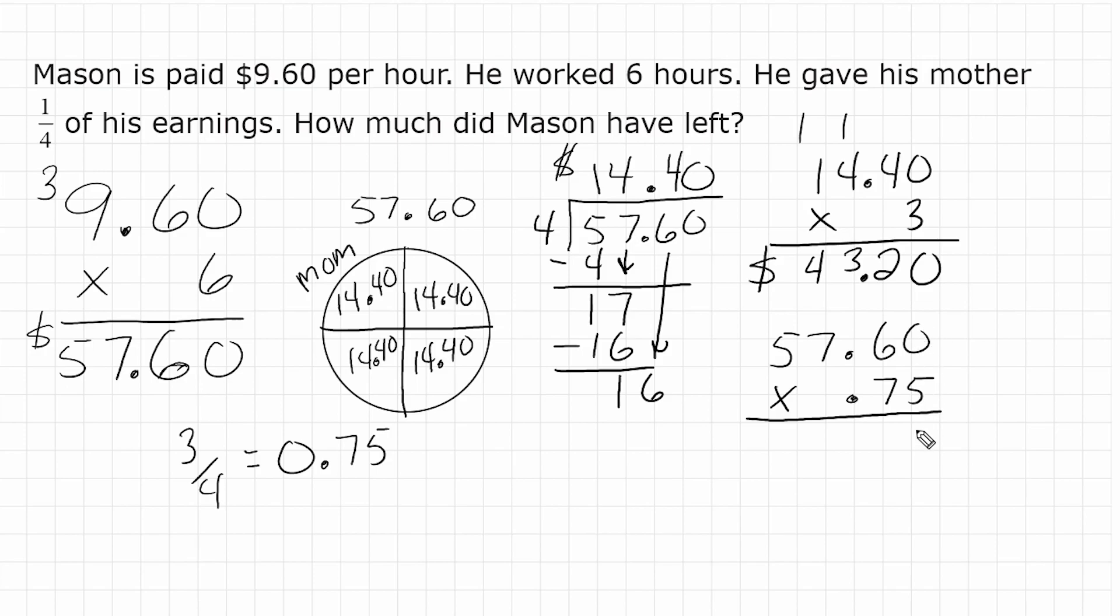So we have a product of zero here. This is 30. We carry the 3. 5 times 7 is 35, plus 3 is 38. Carry the 3. 5 times 5 is 25, plus 3 is 28. All right, on the next row, we go to the 7. 7 times 0 is 0. 7 times 6 is 42. We carry the 4. 7 times 7 is 49, plus 4 more is 53. We carry the 5 from that 53. And 7 times 5 is 35, plus 5 more is 40.